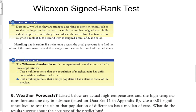The Wilcoxon signed rank test is a test that uses ranks for two applications. Application one: test the null hypothesis that a population of matched pairs has differences with a median equal to zero — meaning if you calculate all the differences for an entire population of matched pairs, that median equals zero. The second application is to test a null hypothesis that a single population has a claimed value for its median.